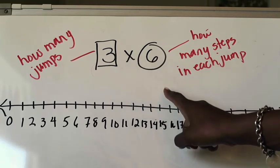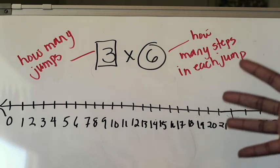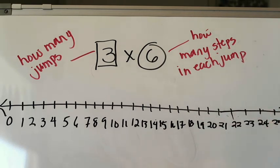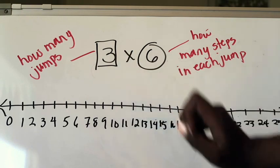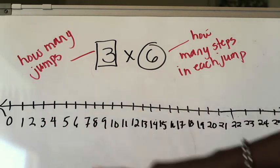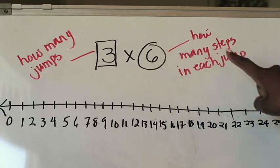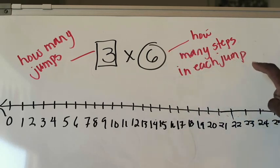Here we have our first example: three times six. What I'm showing you today is just an additional tool to help you multiply. In this strategy we are skip counting and figuring out how many we have by looking at how many jumps we took. The first number — which I've put a box around — tells us how many jumps we are going to make on the number line. The second factor, which is circled and is six, tells us within each jump how many steps we will take.